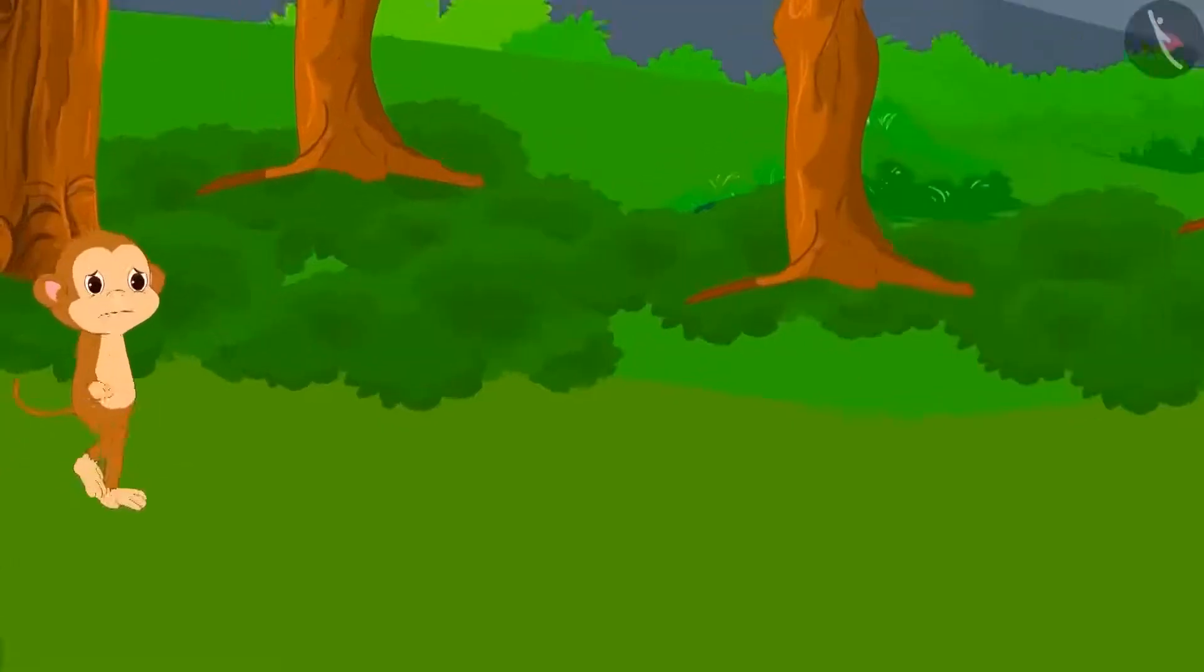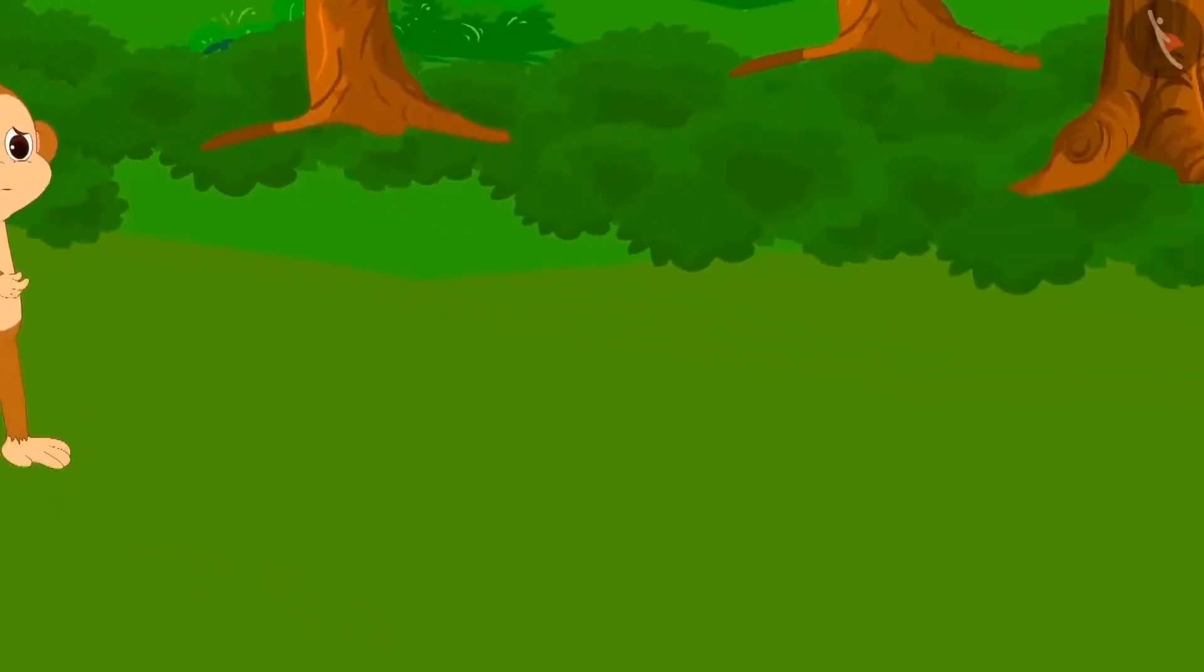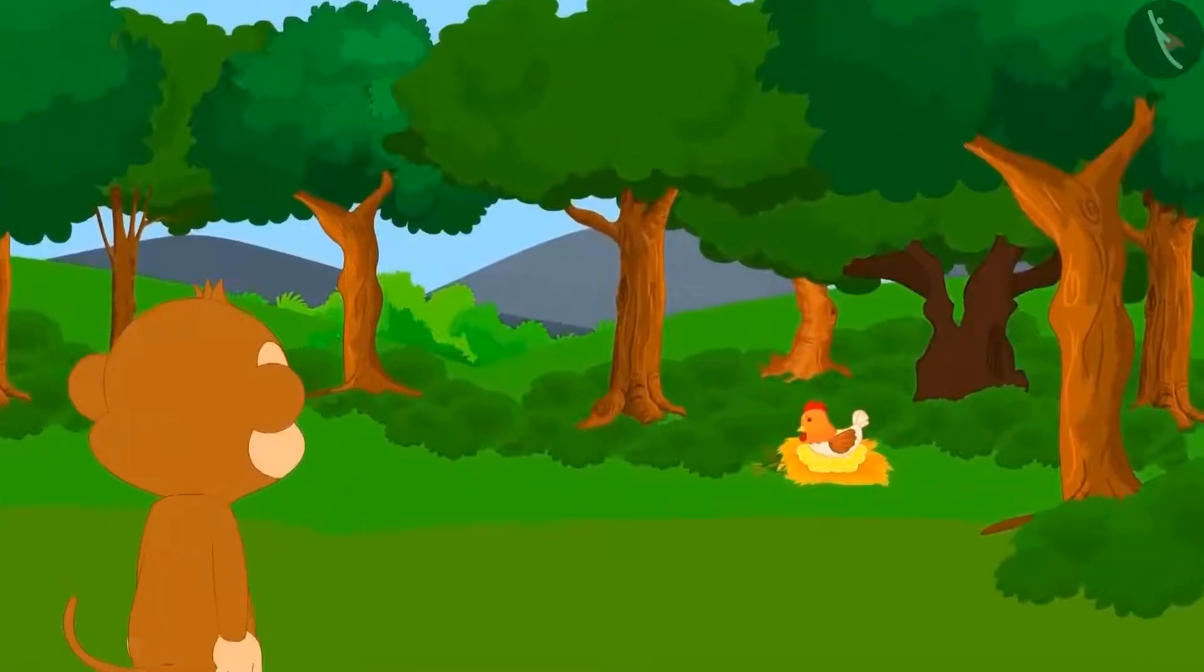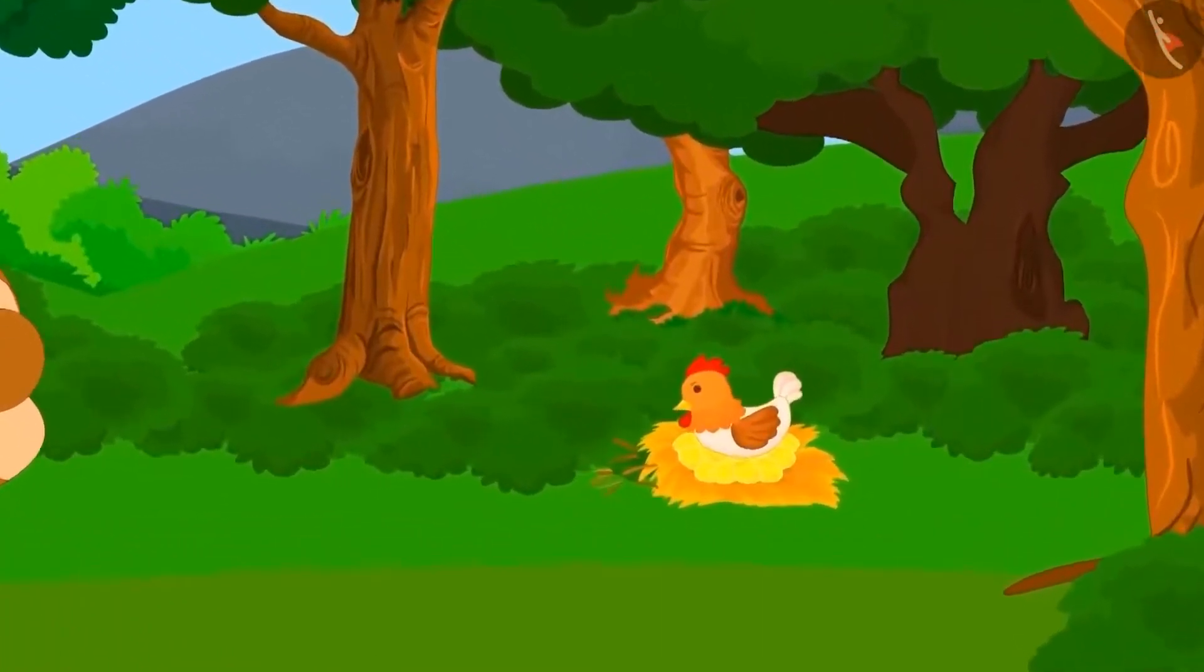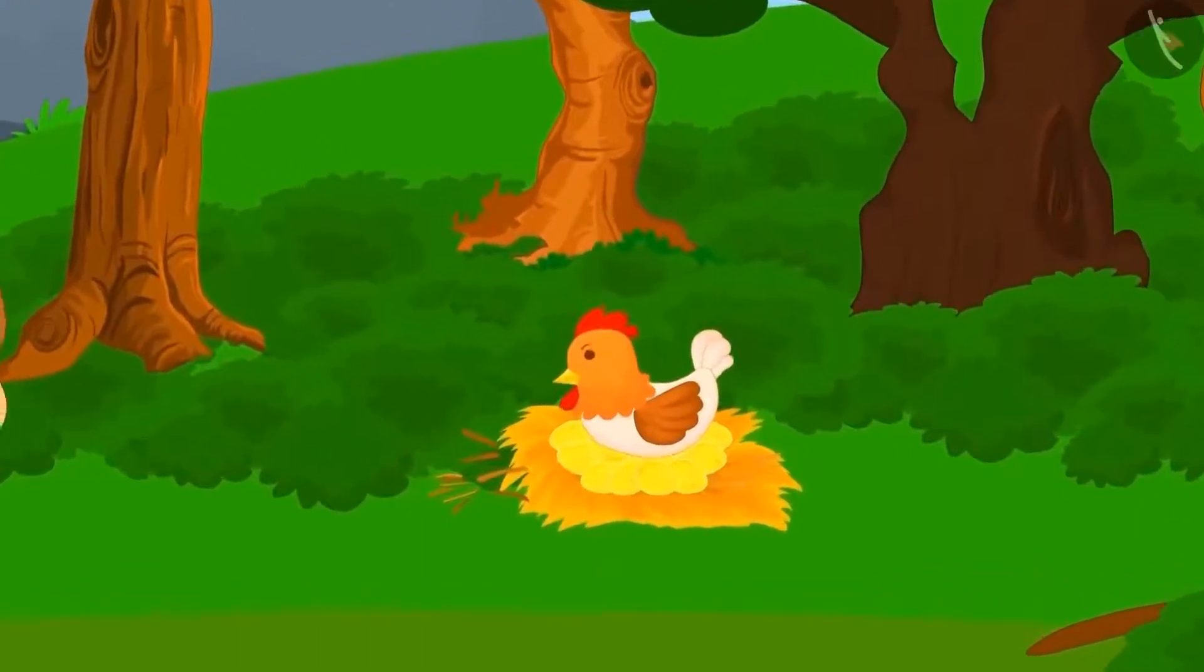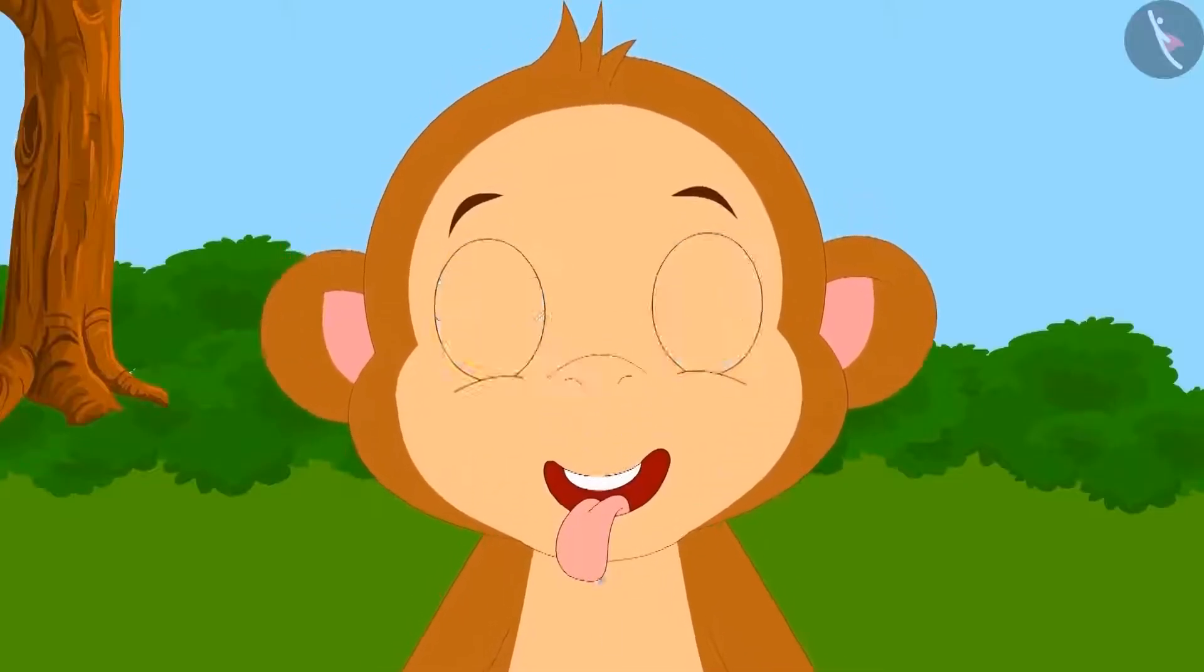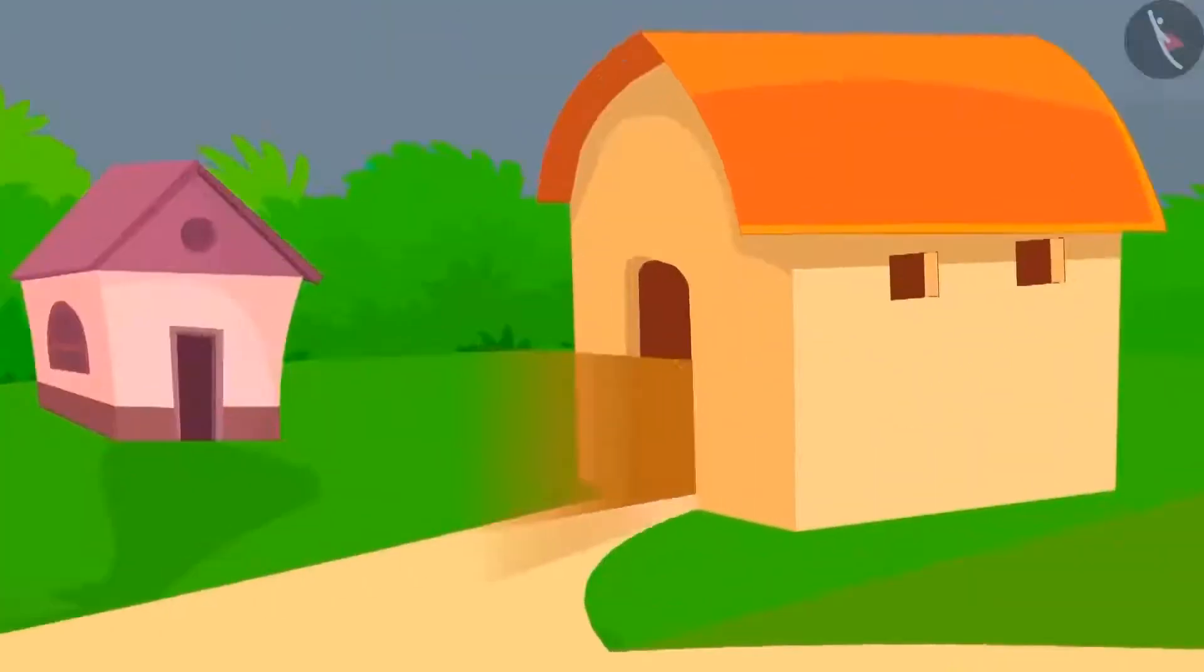One day, Baban was wandering in the forest and regretting how he lost all the three wishes he had got from the genie. Then he saw a hen there, but there was something special about this hen. She was sitting on a pile of golden eggs. There were a total of 23 golden eggs. Baban was very happy and he took the hen and all the golden eggs and went home happily.